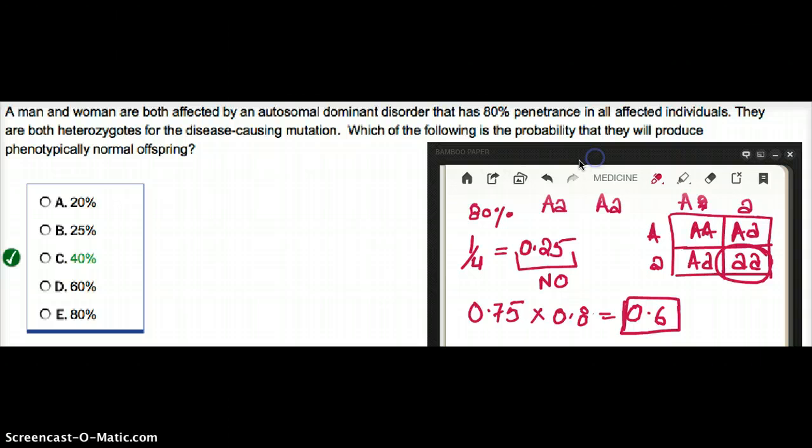But the question asks which of the following is the probability they will produce an offspring phenotypically normal. This is the probability of the affected, but we have to find the probability that they will produce an offspring that's phenotypically normal. So, the only thing that we have to do is 1 minus 0.6 equals 0.4.